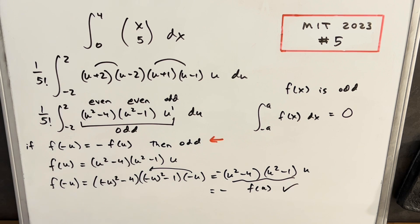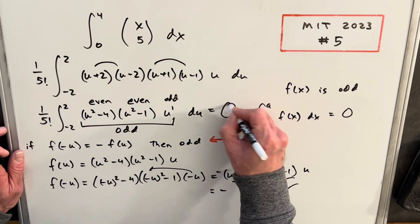Pretty easy, right? But then because we have an odd integral with symmetric bounds, what we have in front doesn't matter. The whole integral is going to be just zero.